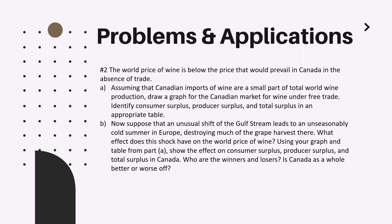Okay, problem 2. Let me read this. The world price of wine is below the price that would prevail in Canada in the absence of trade. Assuming that Canadian imports of wine are a small part of total world wine production, draw a graph for the Canadian market for wine under free trade. Identify consumer surplus, producer surplus, and total surplus in an appropriate table. Now the second question: suppose that an unusual shift of the Gulf Stream leads to an unseasonably cold summer in Europe, destroying much of the grape harvest there. What effect does this shock have on the world price of wine? Using your graph and table from part A, show the effect on consumer surplus, producer surplus, and total surplus in Canada. Who are the winners and losers? Is Canada as a whole better or worse off?